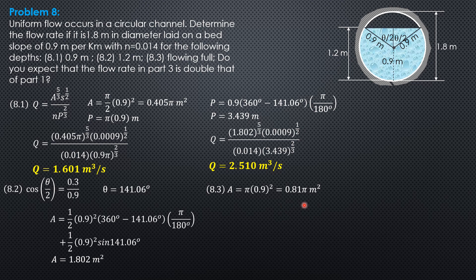So we expect that the discharge will be double this, because the area is double. The perimeter is also double. The perimeter is pi d, 1.8 pi.